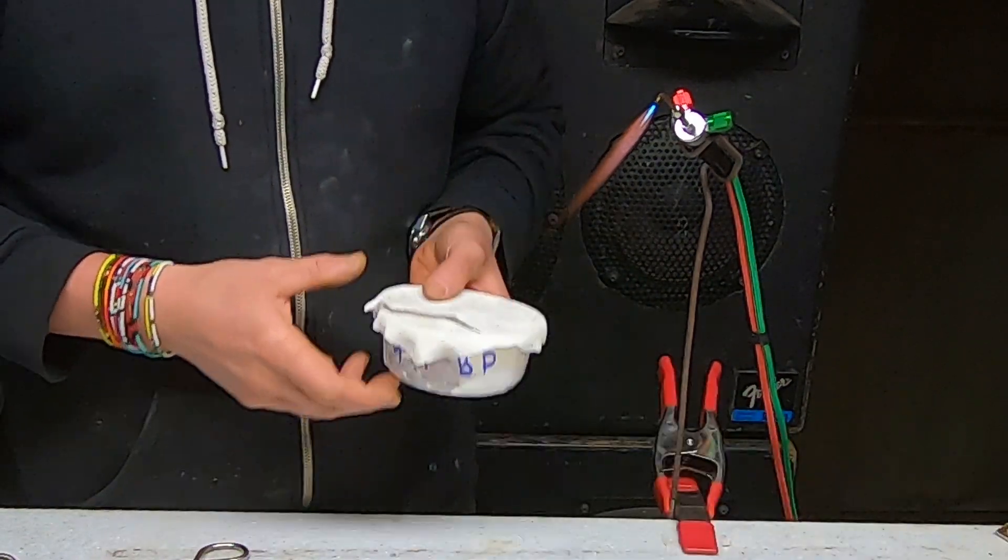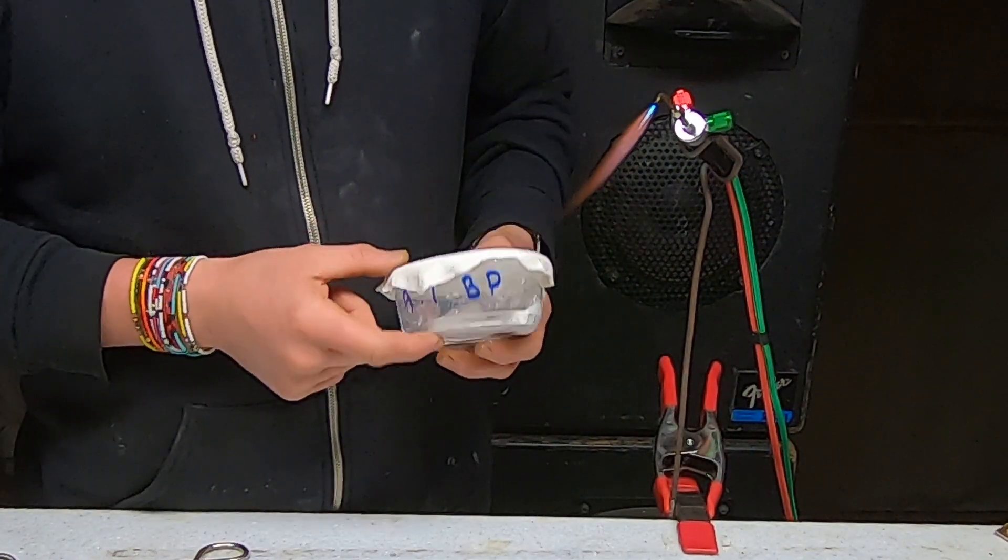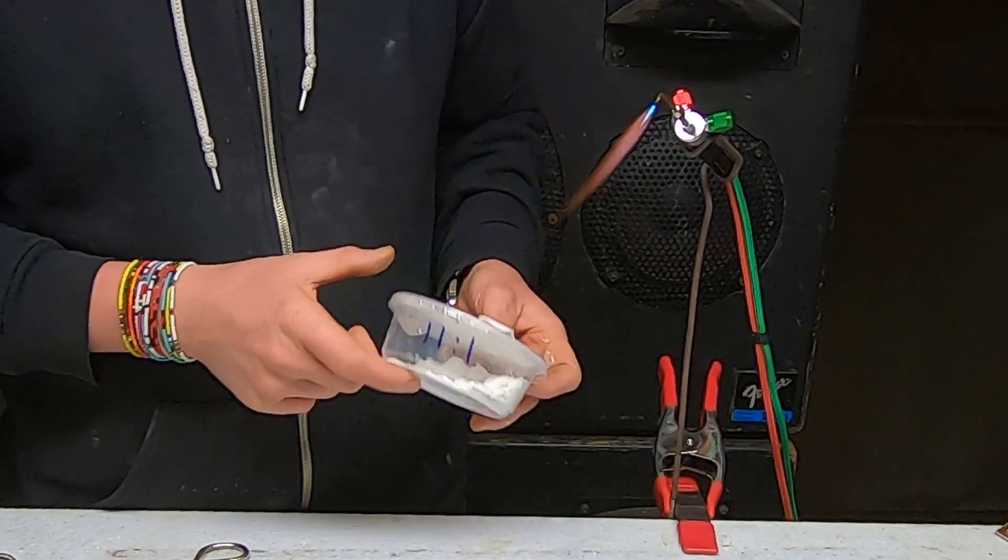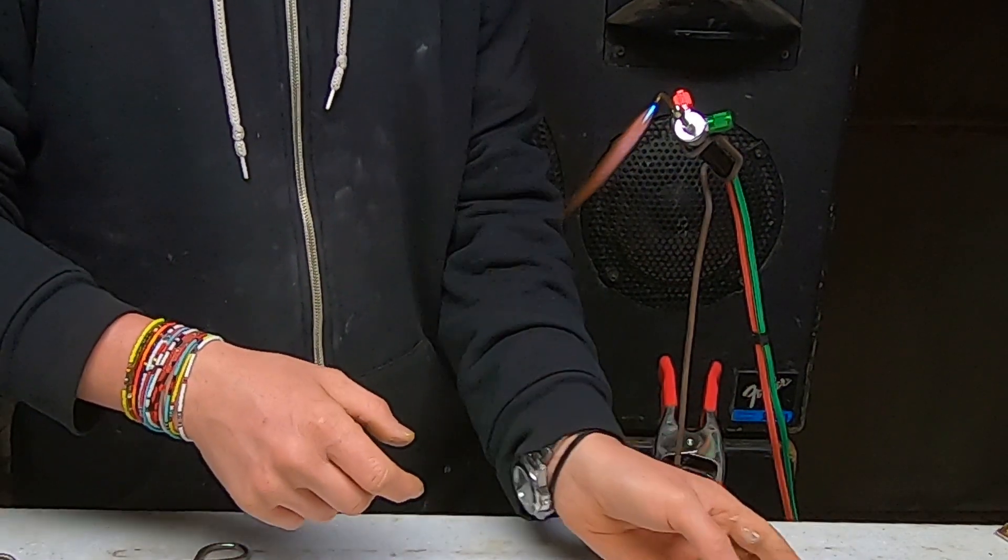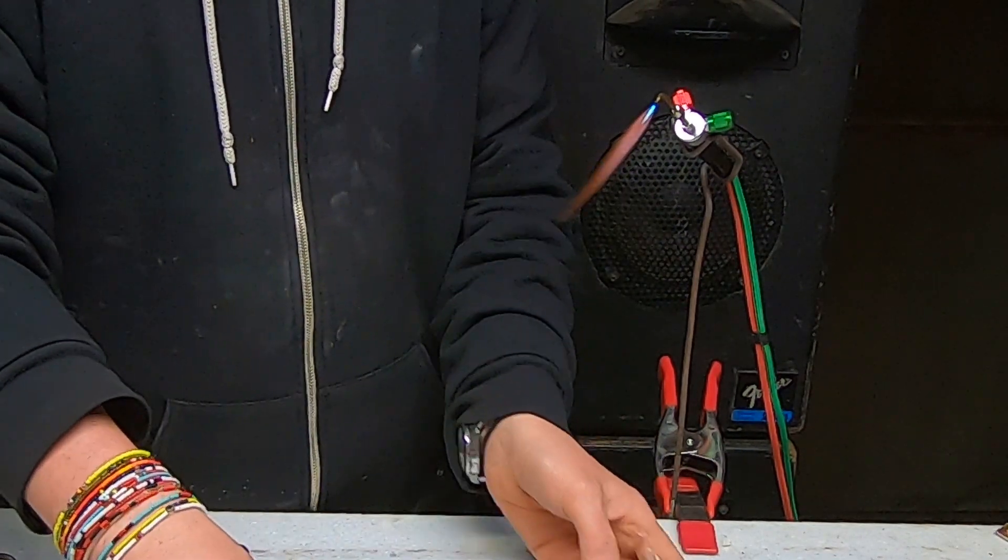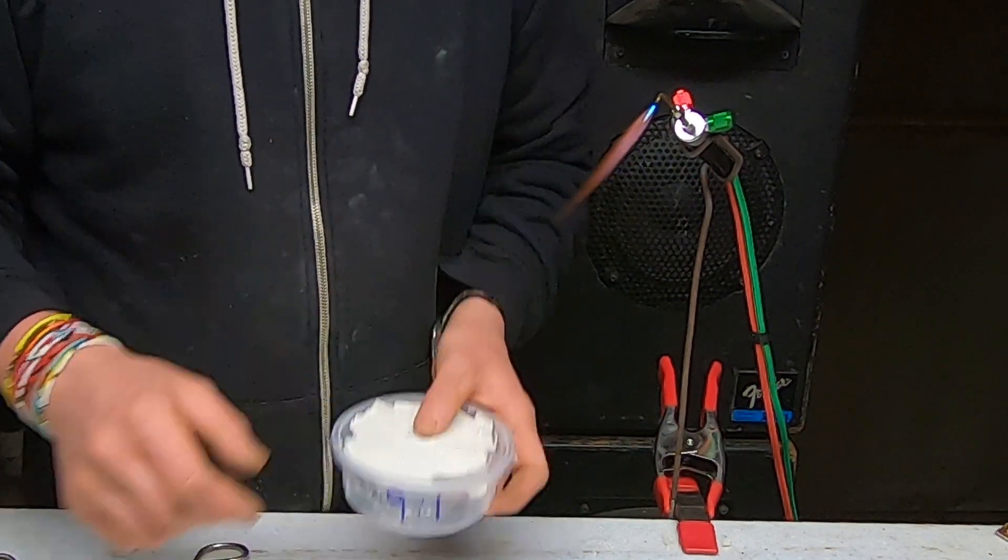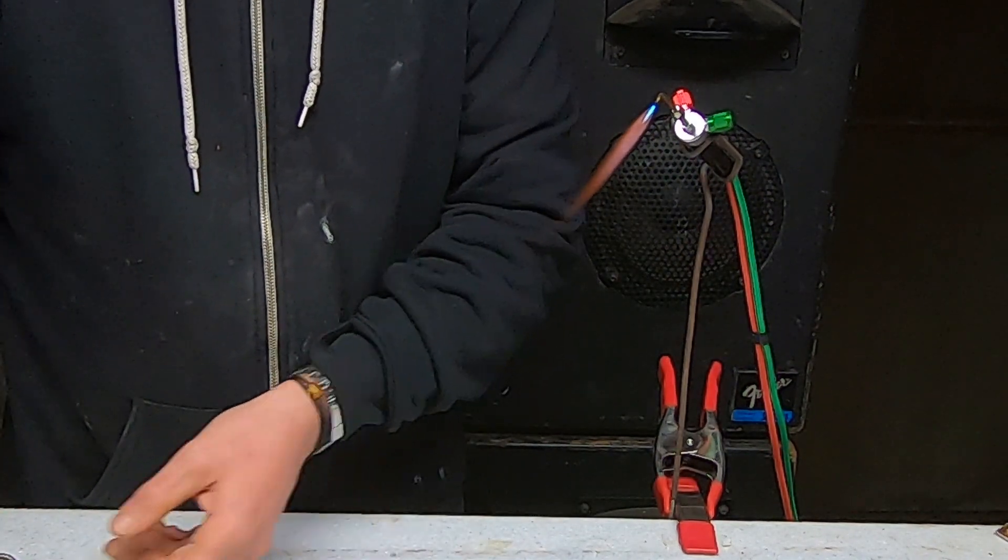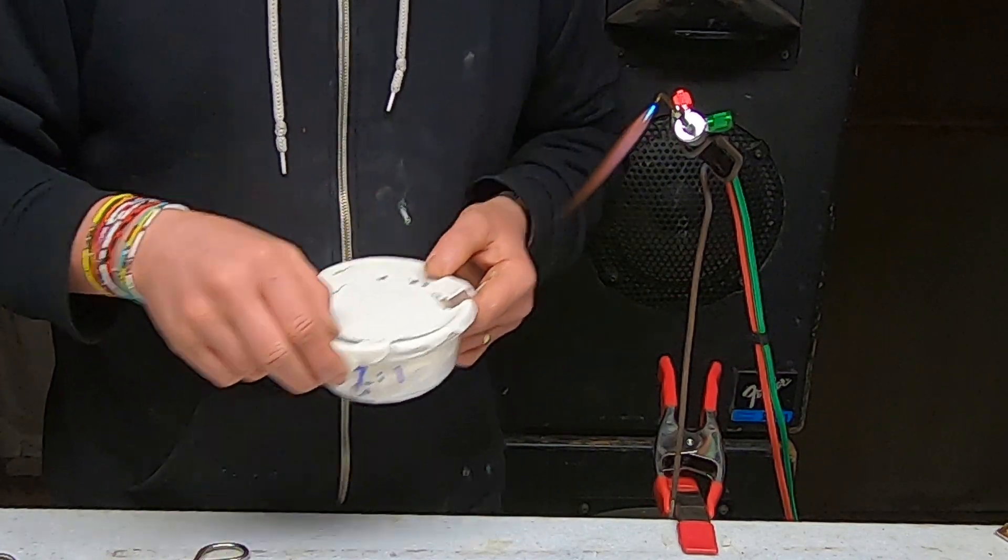We've got the baking powder 9:1, we've got baking soda 11:1, baking soda 10:1, baking soda 9:1, 8:1, 7:1, and our mystery mix.